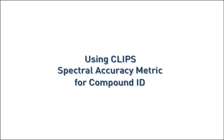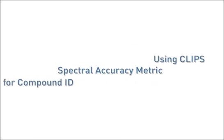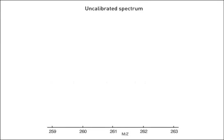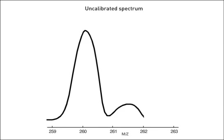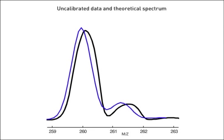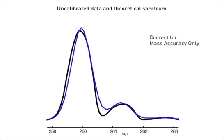Let's illustrate the concept of spectral accuracy and how it works for compound ID. Here is an uncalibrated spectrum, which we will attempt to compare against a theoretical spectrum calculated using a known line shape. The actual spectrum is quite good, with good symmetry and peak shape. Since we do not know the line shape of the uncalibrated data, we must arbitrarily choose a line shape for comparison. One can see that the shapes and positions do not match well. If we calibrate the mass position only, the peak shapes still do not align well. Even after correcting the peak position, it is clear the two profile curves do not align well. The goodness of the fit between the two is a measure of spectral accuracy.